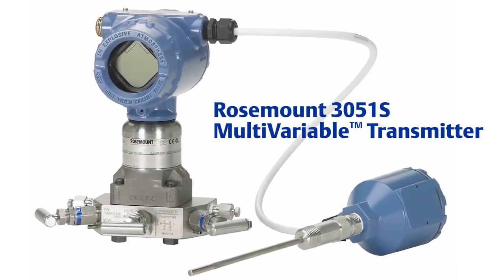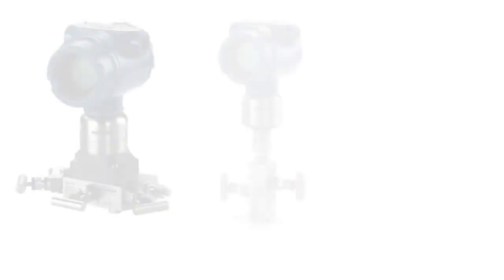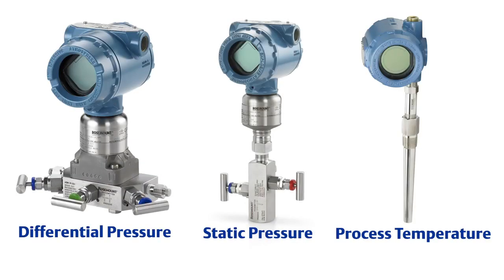As we've learned, the Rosemount 3051S multivariable transmitter replaces three isolated single variable products within one device, reducing the number of calibration steps by 40%.